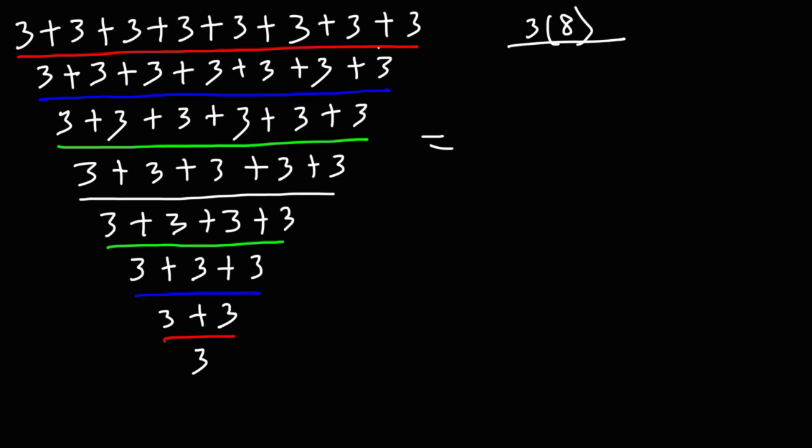In the next level, we have seven threes that we're adding, so that's going to be three times seven. And then below that, we have six threes that we're adding, so it's going to be three times six. And then the pattern will continue.